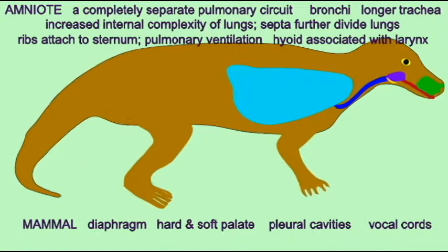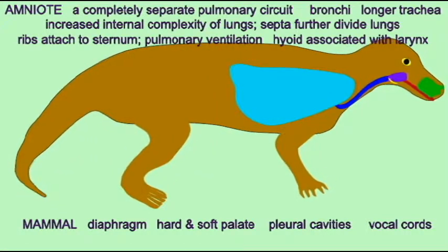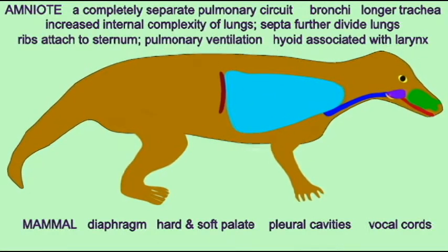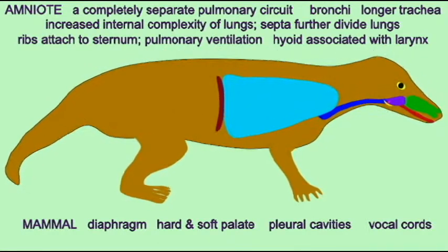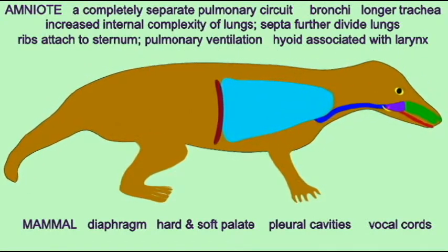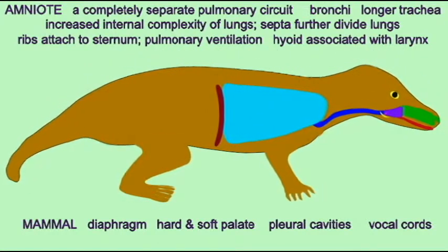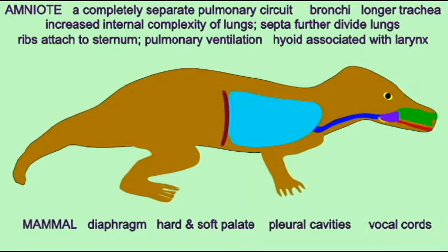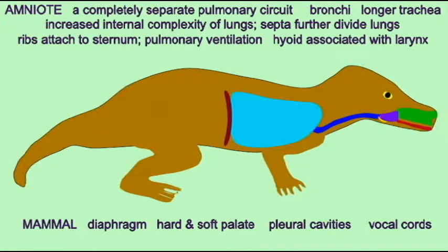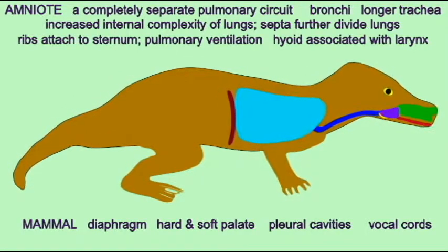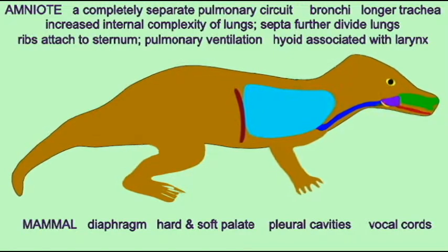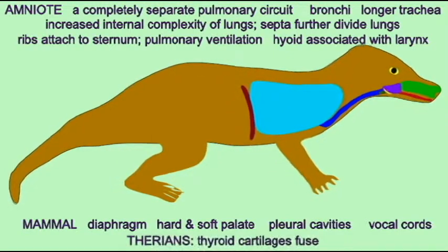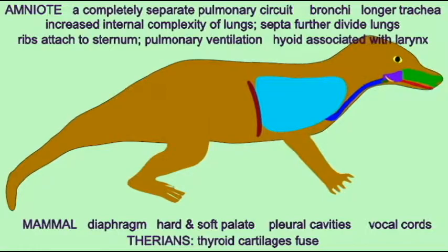This allowed deeper ventilations. A hard and soft palate separated the oral and nasal cavity, allowing more continuous breathing even while eating. Pleural cavities around the lungs evolved. Vocal cords evolved. In therian mammals, the thyroid cartilages would fuse.